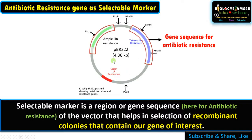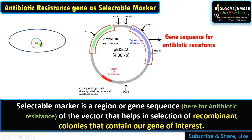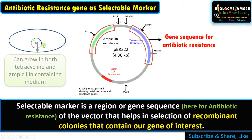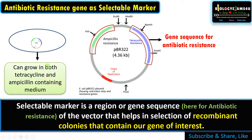To make it more clear, suppose this is a bacterium. If this bacterium has this vector with both selectable markers intact — that is, the ampicillin resistance region and tetracycline resistance region — then this bacterium can grow in both tetracycline and ampicillin containing medium.